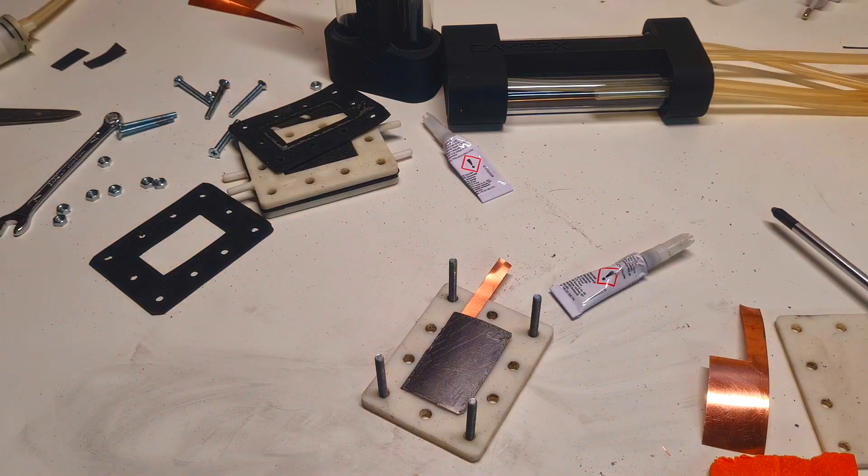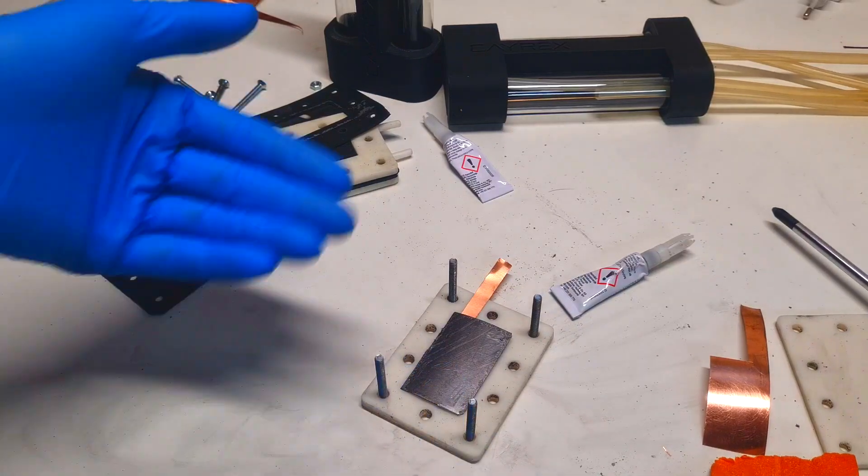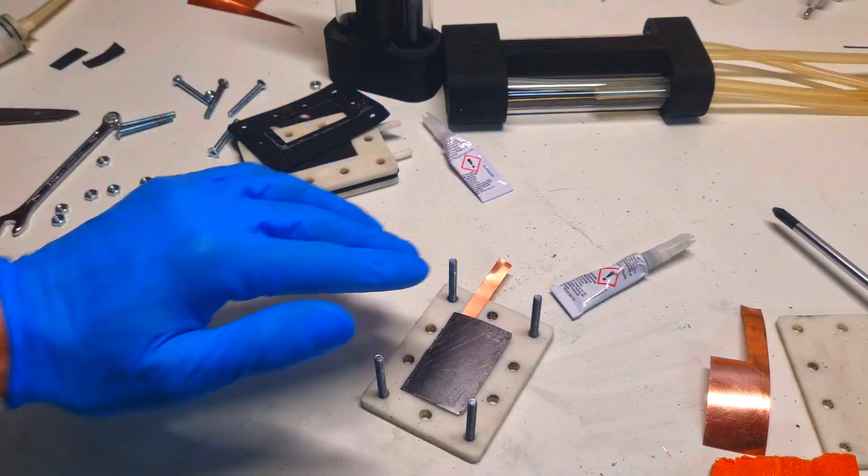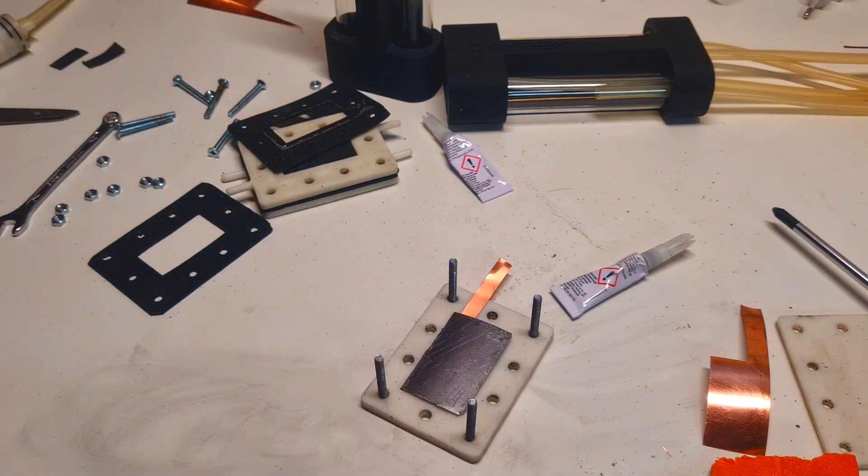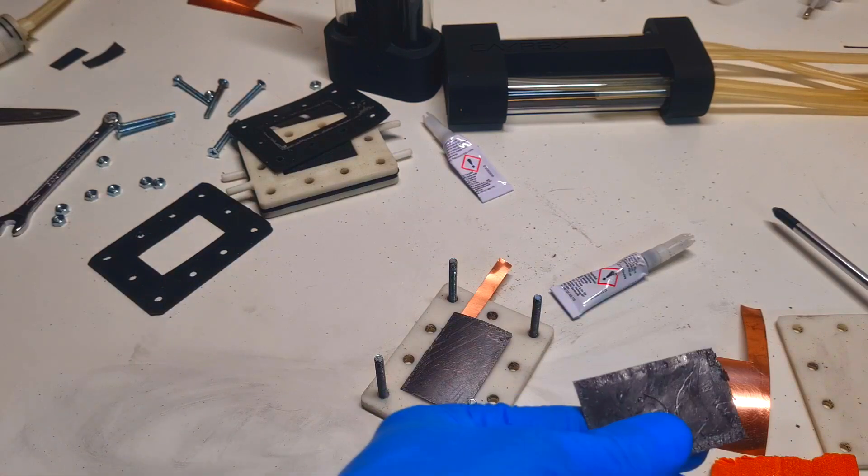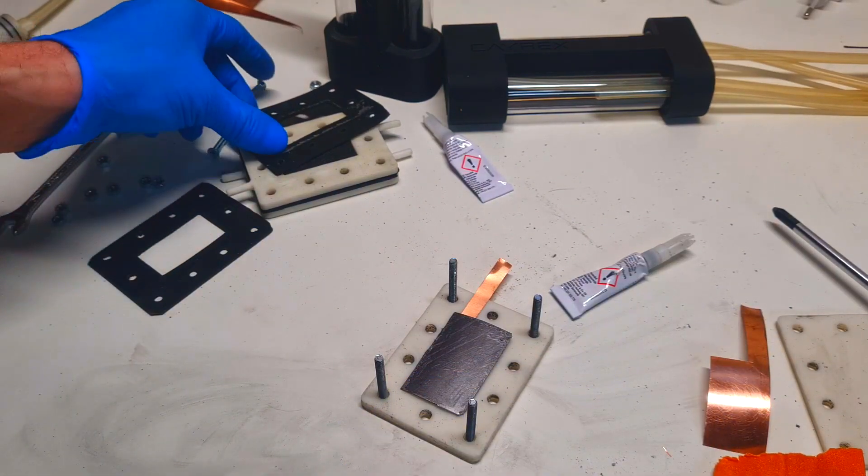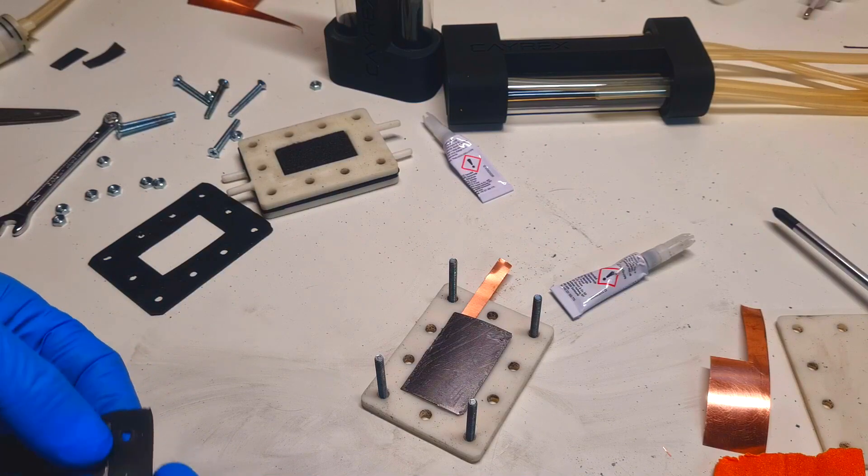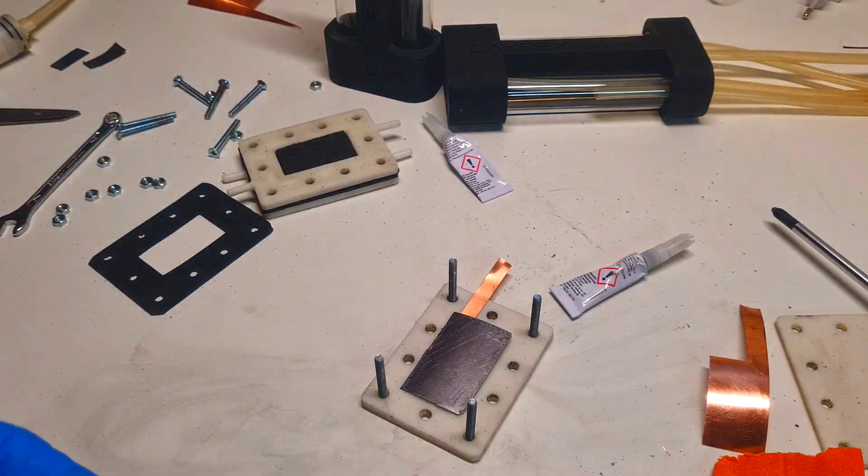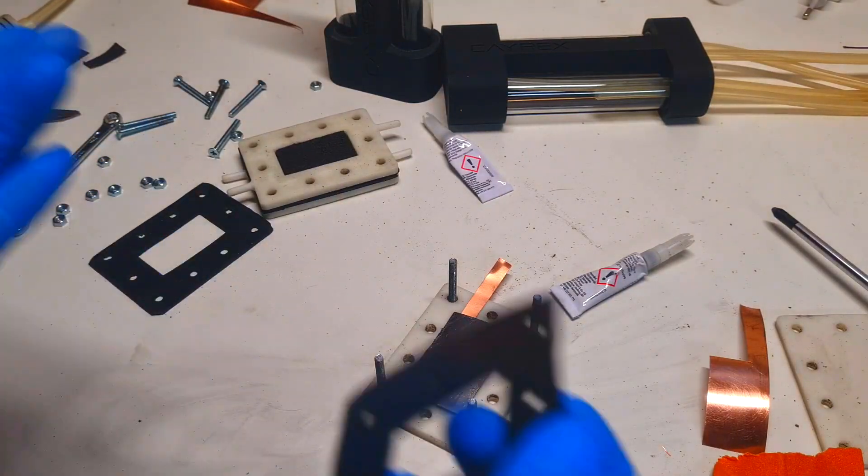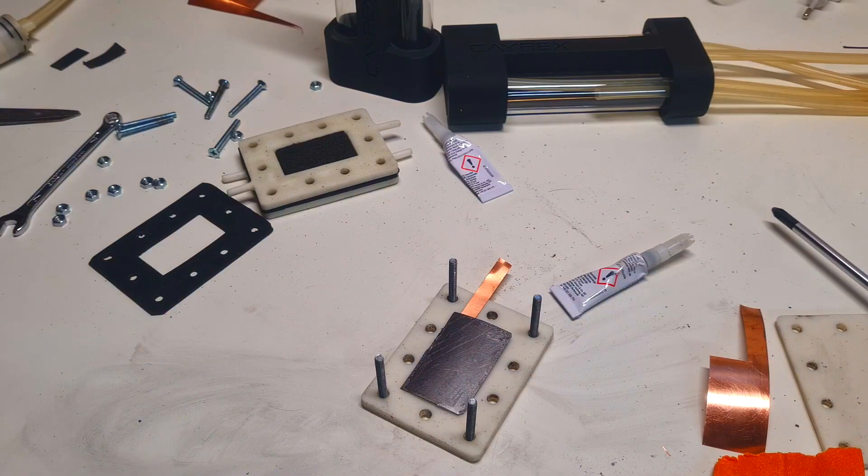Like so, so copper is below and on the top of the copper I put this graphite. And now the process of assembling this cell is the same like I do in my previous video.